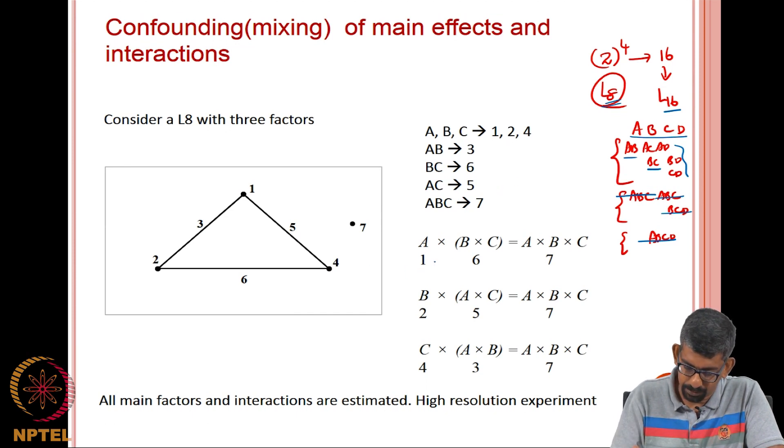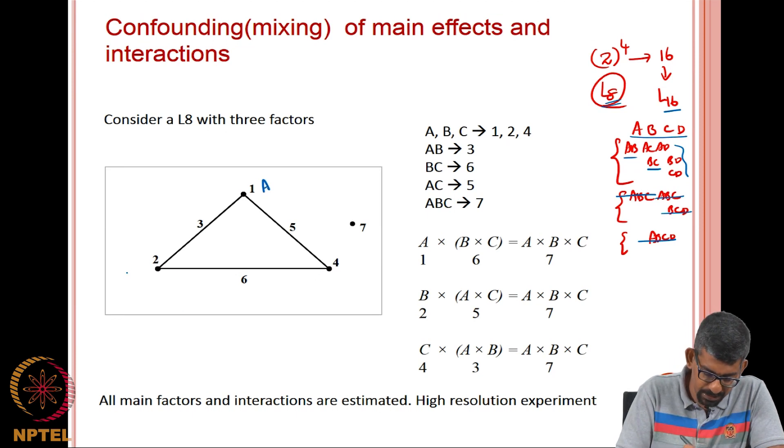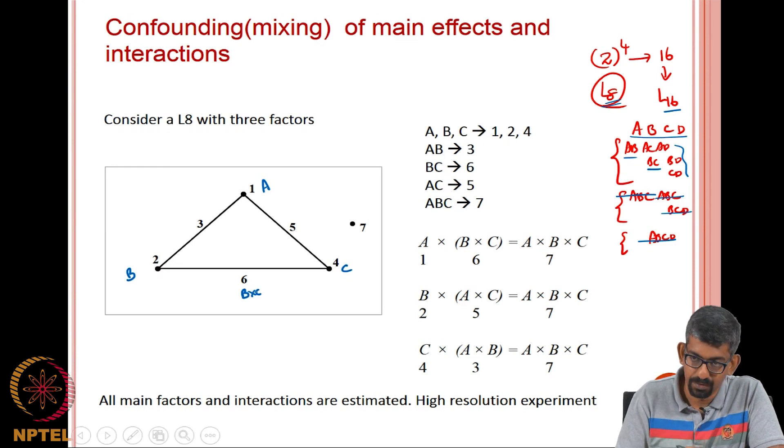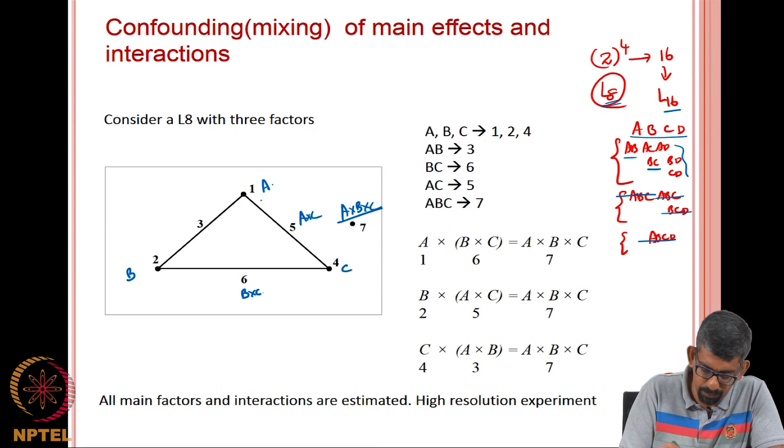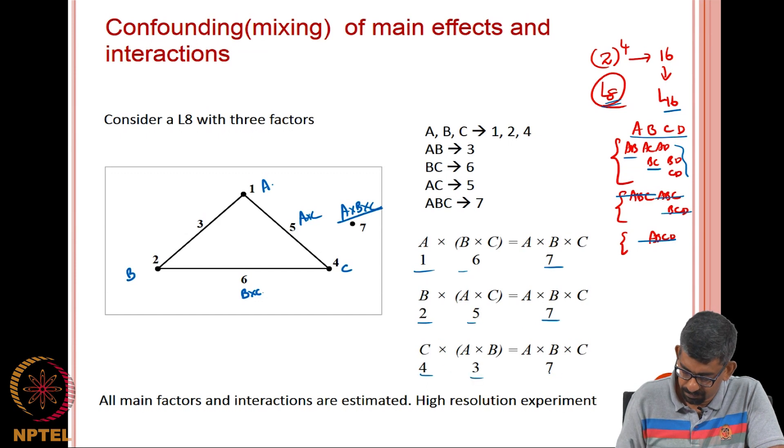For instance, A was here, B was here, C was here. So, this is B cross C. Now, I am going to combine one main factor and one interaction to give me A cross B cross C in column 7. Get the point? Or, I can do B cross A cross C, that is also equivalent to A cross B. But if you look at it, 2, 5 will give you 7, 1, 6 will give you 7. So, here, instead of saying D, I can have A cross B cross C, provided I do not have the fourth quantity. That will give me the full factorial experiment. Now, what I am doing? I am actually removing this A cross B cross C and I am putting my D there. That is what? What happens if you need to add another factor?